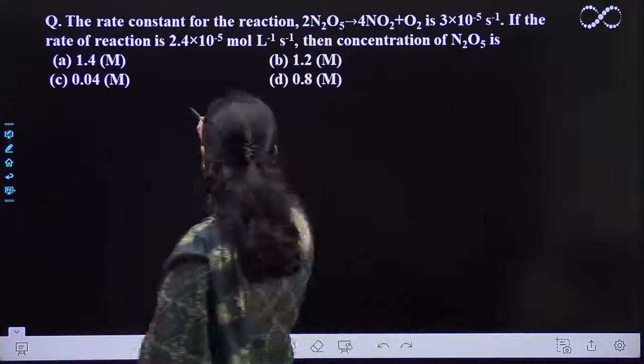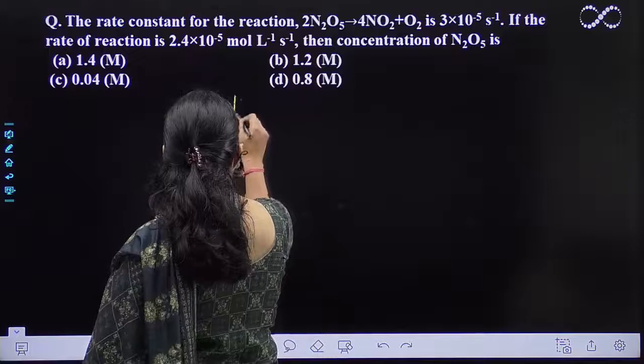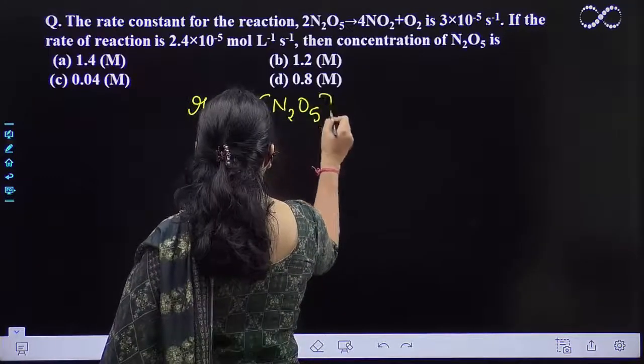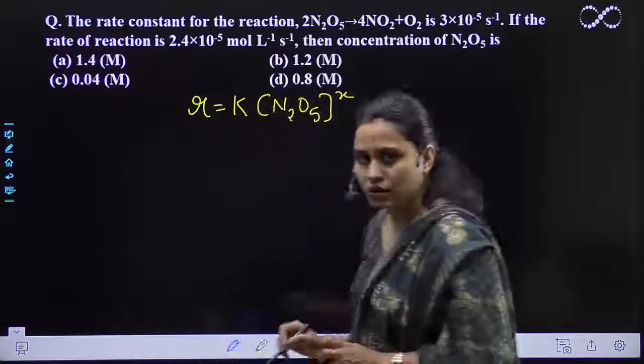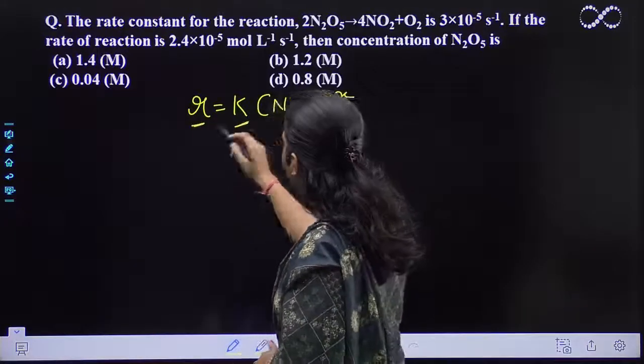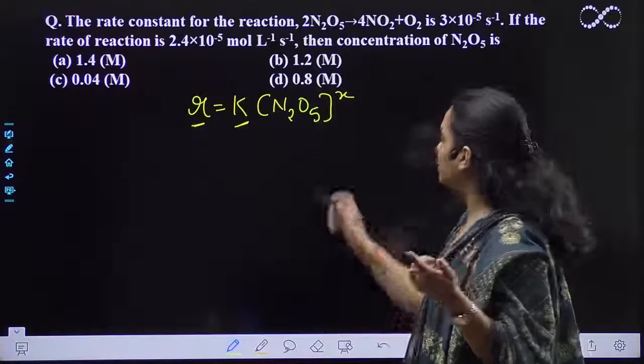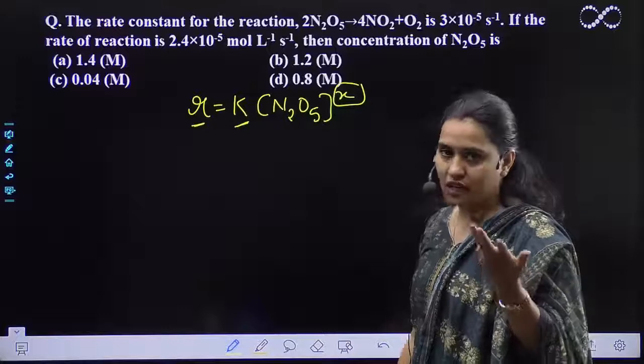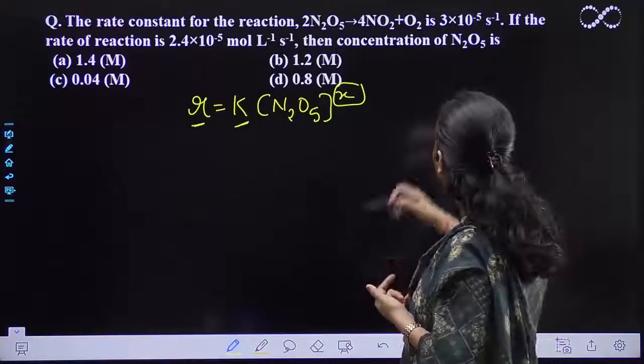So let's just suppose the rate law is R = K[N2O5]^X. Let X be the order of reaction. You're given the value of R, you're given the value of K. Now from this K value you can find out the X value, since you have only one reactant, so it will be according to that only.